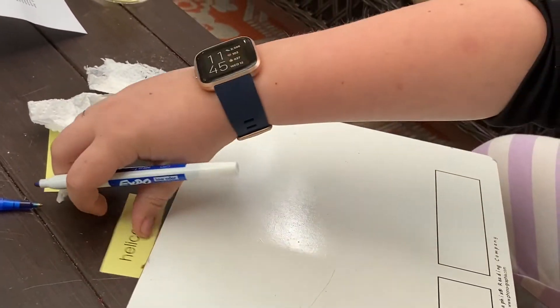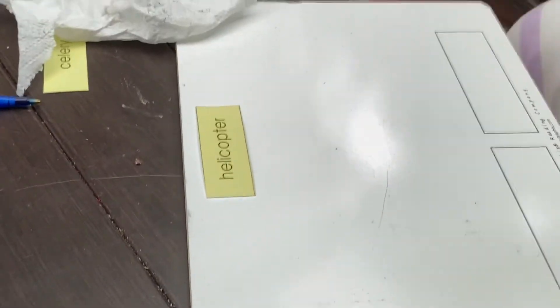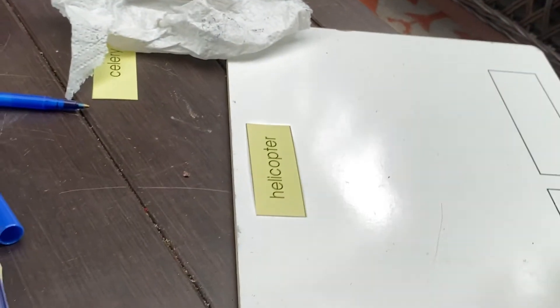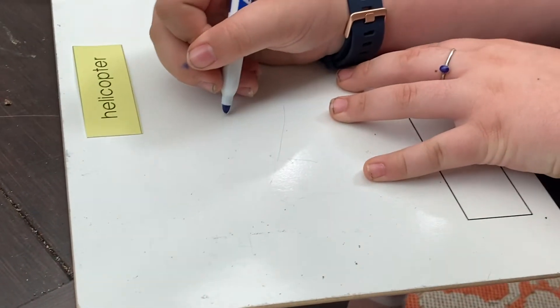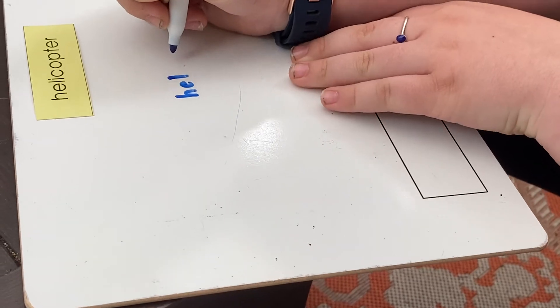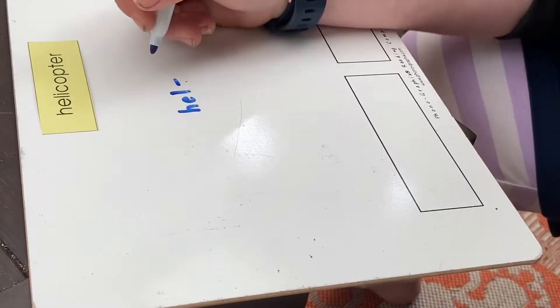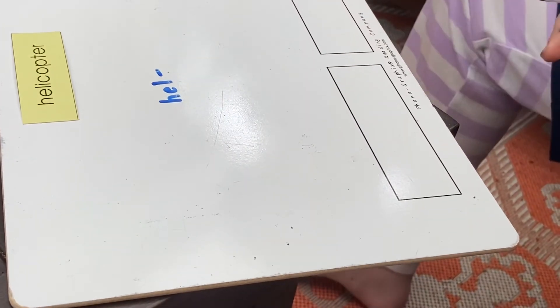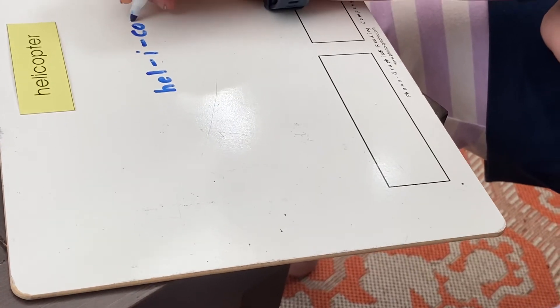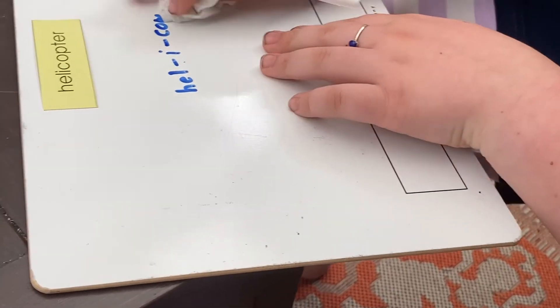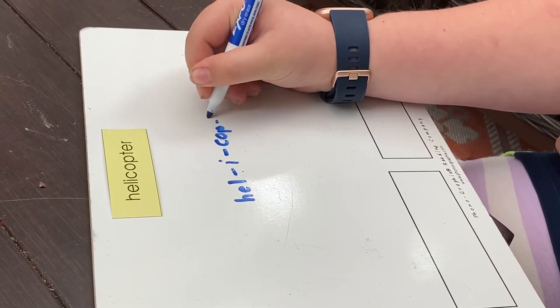And, the last word is helicopter. Remember, we're trying to find the schwa, that little sloppy sound. Let's do... How many chunks are in helicopter? Helicopter. Four syllables. Four syllables. You can say it. It's not a bad word. It's one L. So, Hel. Hel. Helicopter.